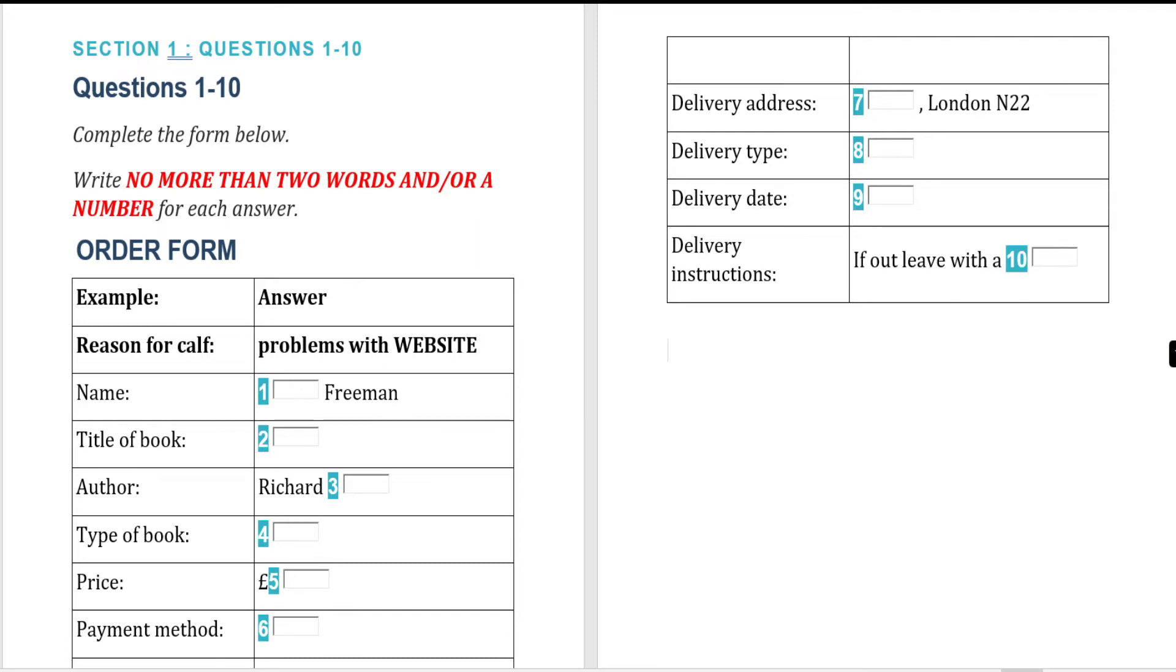Right, almost done. Now I just need the delivery details. Right, I've got my friend's address here. It's 62 Green Gardens London N22. Just typing that in... 52 Green Gardens... No, it's number 62.